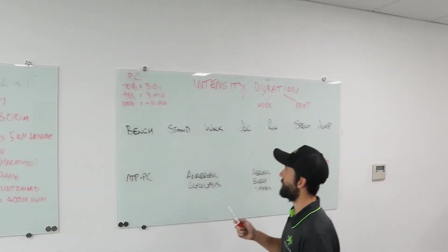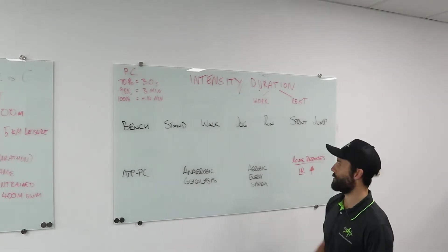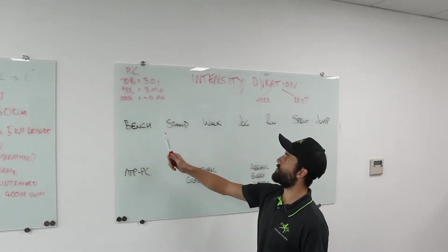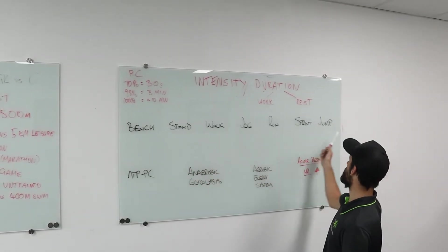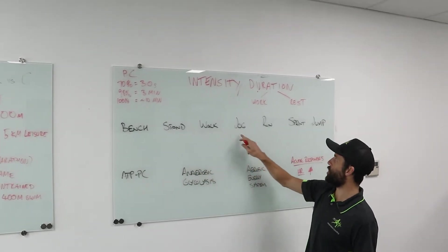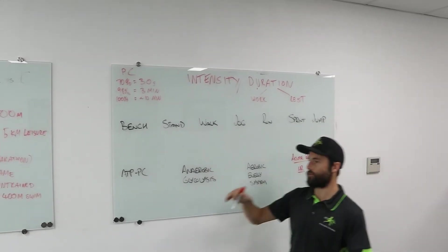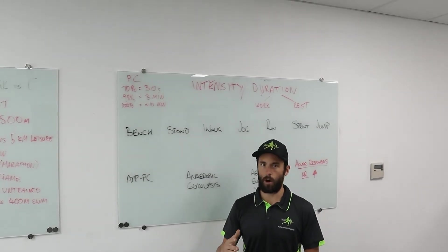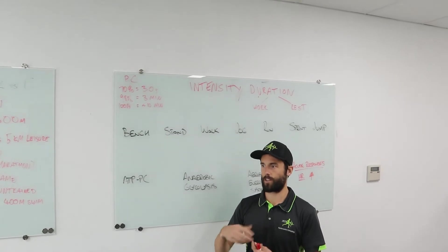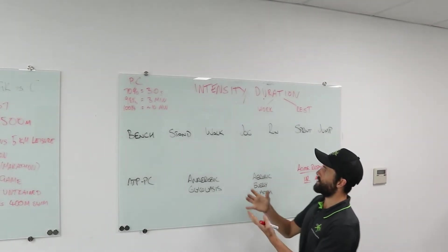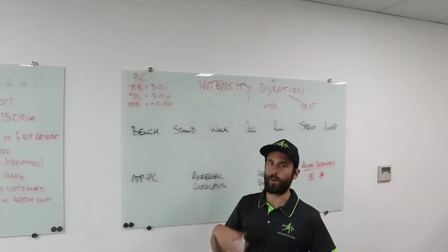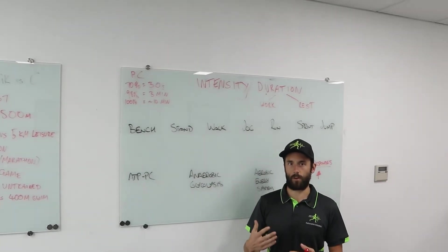I've written up the three energy systems on the board. When we talk about energy interplay, we want to discuss what's going on with each system. I've listed a range of activities in intermittent sports: bench, standing, walking, jogging, running, sprinting, and jumping — for example, reaching for an intercept. Bench, standing, and walking are very low intensity activities — aerobically dominant. That's straightforward.